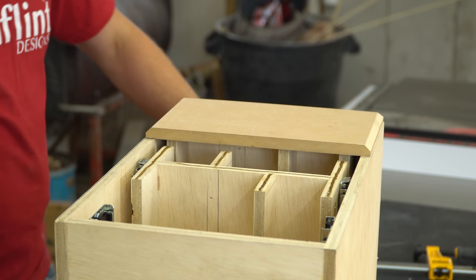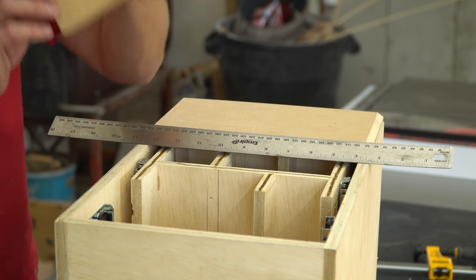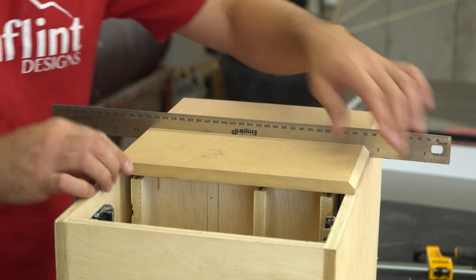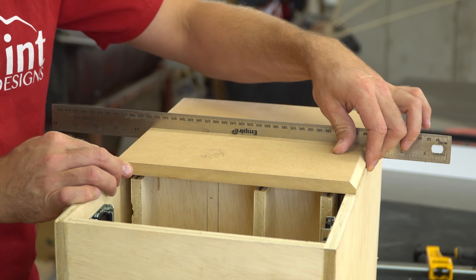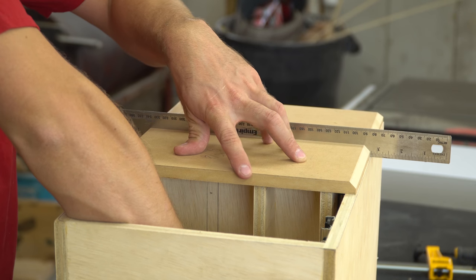I mounted the drawer faces by putting CA glue on the leading edges of the drawer pieces, then spraying accelerator on the back side of the face. There's just enough of a space between the drawers and the front of the box that I could set the face down on top and get them perfectly aligned before lifting the drawer up and letting the CA glue take hold.